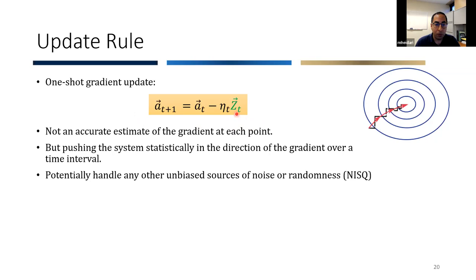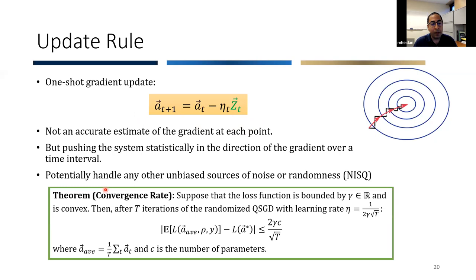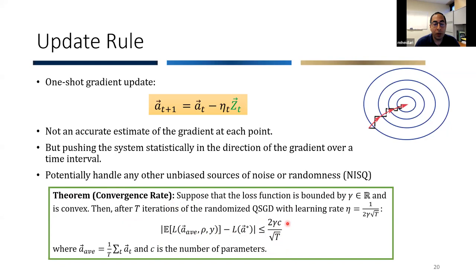As long as the sources of randomness are unbiased, we can prove convergence rates. For instance, if the underlying loss function is bounded and convex, then after T iterations of this update rule, the resulting loss is very close to the optimal loss, with convergence rate dropping to zero at order O(1/√T).